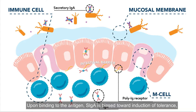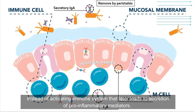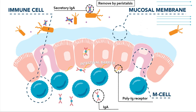Upon binding to the antigen, secretory IgA is biased toward induction of tolerance instead of activating the immune system, which would otherwise lead to the secretion of pro-inflammatory mediators.